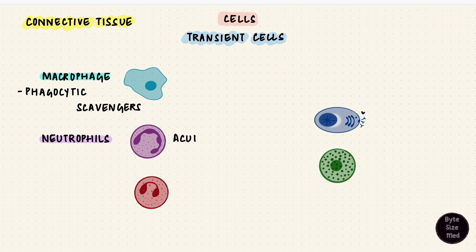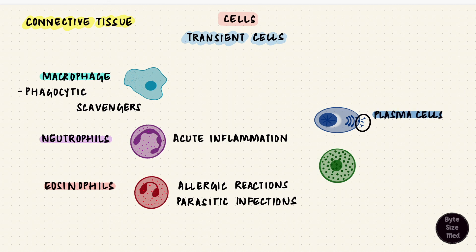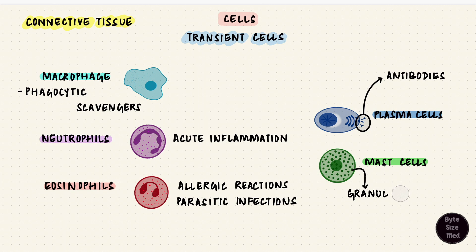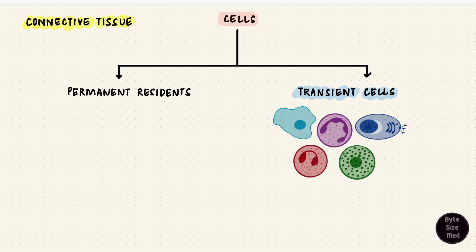Neutrophils are involved in acute inflammation. Eosinophils are involved with allergic reactions and parasitic infections. Plasma cells are modified B lymphocytes, and they produce antibodies. Mast cells have granules and are involved in inflammation — for example, in hypersensitivity reactions. Mast cells degranulate, releasing inflammatory mediators from those granules. So there are lots of different types of immune cells that move into the connective tissue when required to do their job.